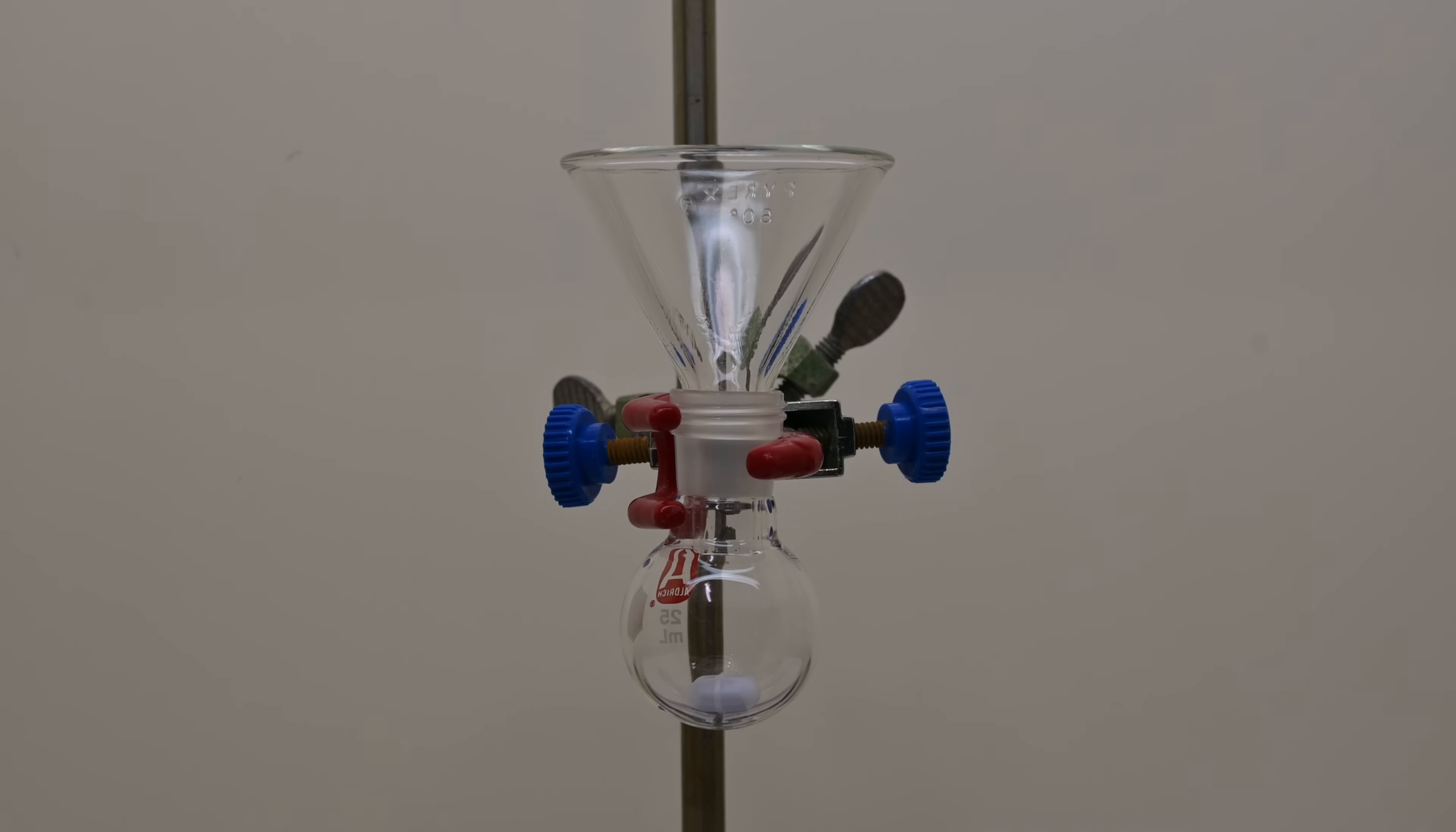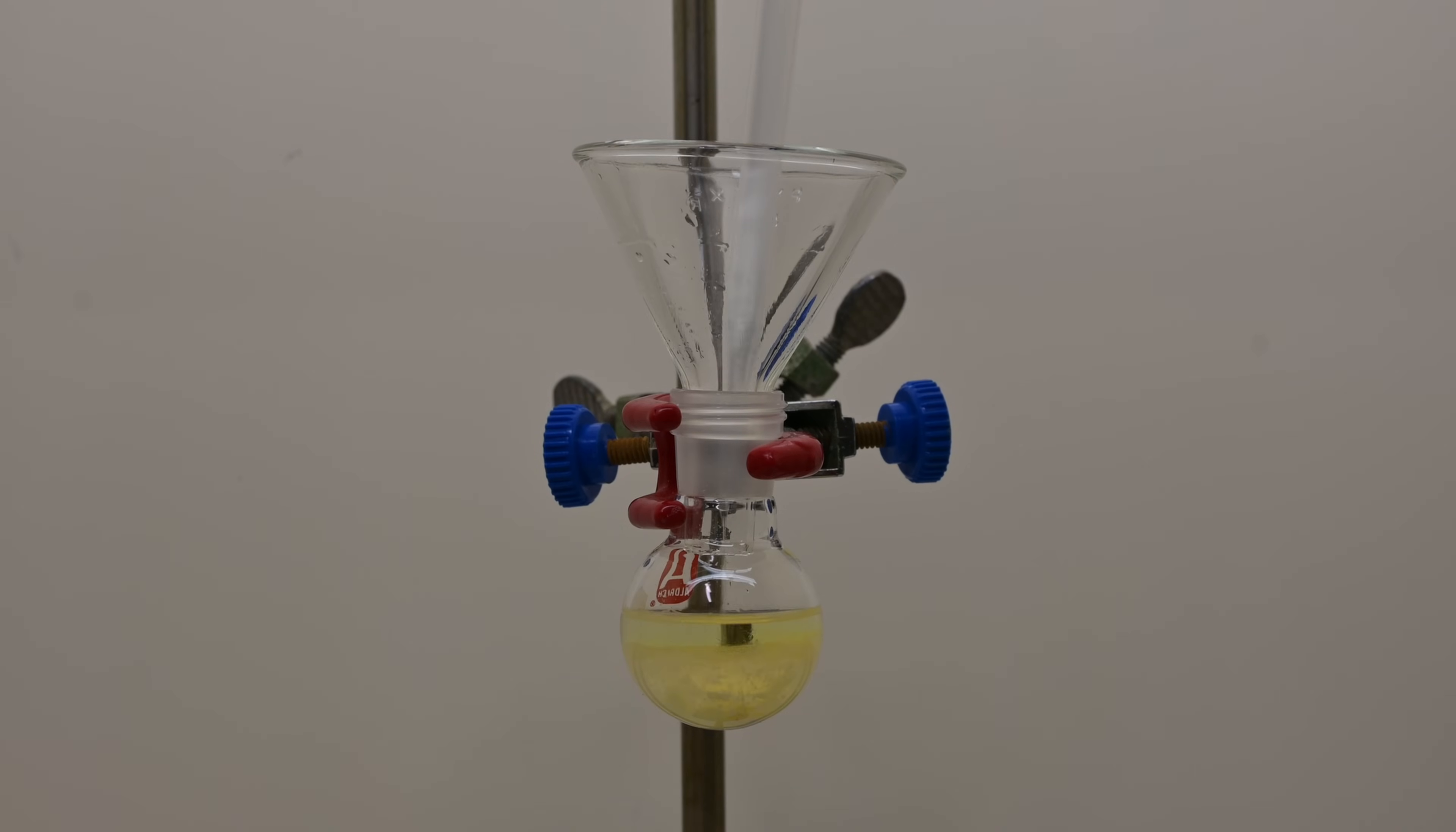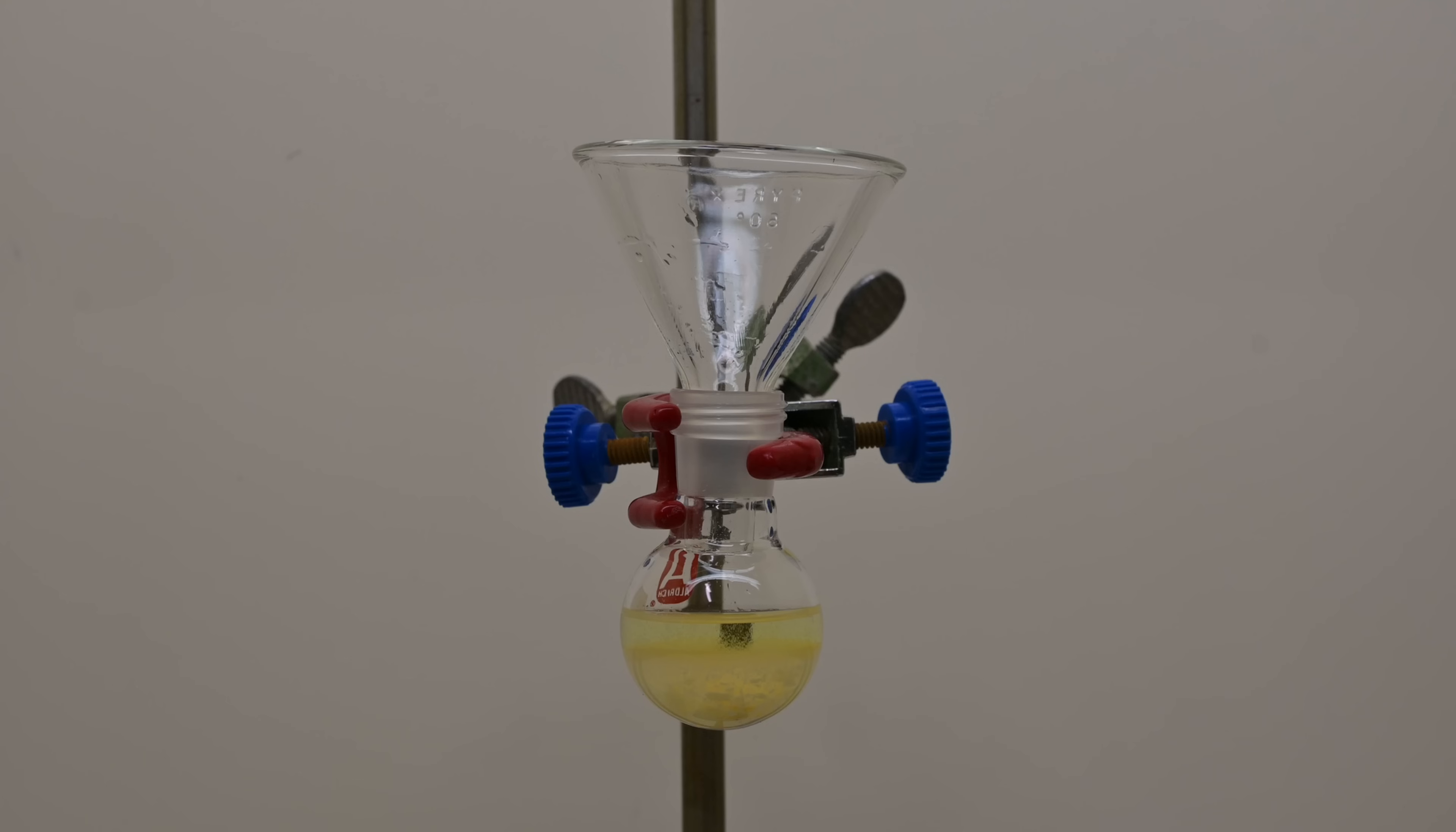In this synthesis, we begin by carefully measuring and combining our reagents: 1 gram of benzil, 1 gram of urea, followed by 15 milliliters of ethanol, and 3 milliliters of 30% aqueous sodium hydroxide into a small round bottom flask. The role of sodium hydroxide here is crucial. It deprotonates the urea, significantly increasing its nucleophilic nature and enabling it to effectively attack the carbonyl carbon groups present on the benzil.